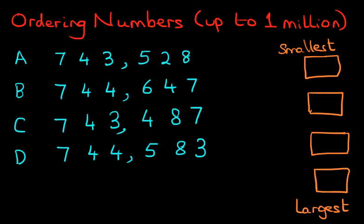On the left hand side we've got A, B, C, D — four sets of numbers. On the right hand side we've got the boxes where we have to order them from the smallest to the largest. Smallest at the top, largest at the bottom.